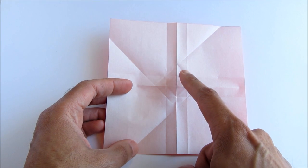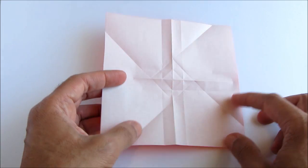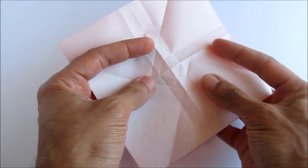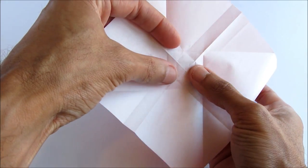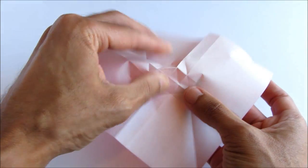And now for this small square right at the center of the paper, we're going to re-crease the edges so that they are also mountain folds. So we'll go around the square, start with one edge, just like that.